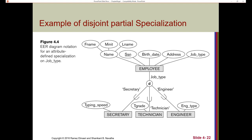Here's an example of disjoint partial specialization. An entity can be an employee and just be designated as employee — they don't have to belong to one of the subclasses — but if they are one of the subclasses like secretary, technician, or engineer, they can't be more than one. They can only fall into one of these subclasses. Here's an example of overlapping and total: we have part class with two subclasses, manufactured and purchased part. A part could be both manufactured and purchased.